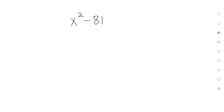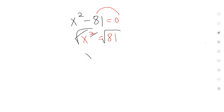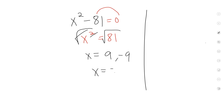One of the quiz questions: you just had to move things over so that it's x² equals 81. Then you do the square root of both sides. What's the square root of 81? 9. Also negative 9 as well. That's the answer — you can write it as 9 and negative 9, or plus or minus 9.